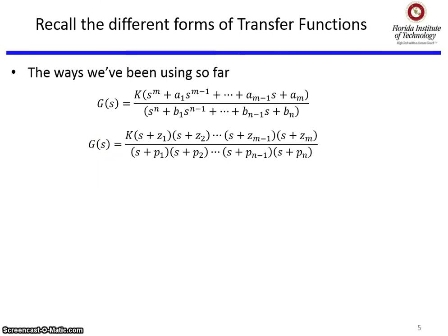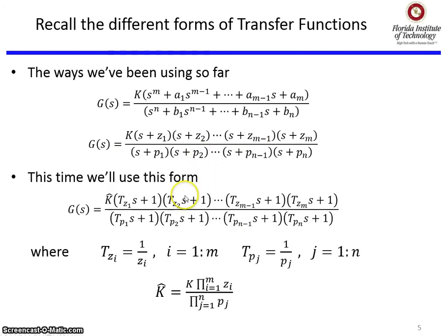We've done transfer functions in a couple different forms. One is polynomials — that's a nice way to display a transfer function. If you have a polynomial, you can always factor it. That's a popular form in the zero-pole-gain format where you have all the factors easily laid out. We're going to use a slightly different form where we pull out all the Z1, Z2, and so on, and all the P1, P2, and so on. We factor those out, and what's left are time constants — for example, TZ2 is 1 over Z2.